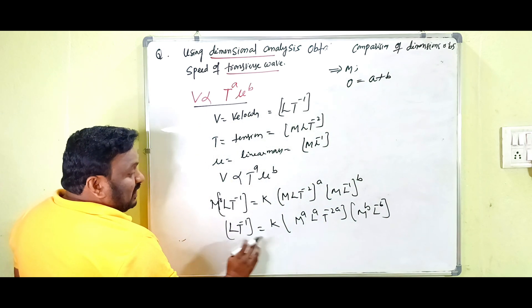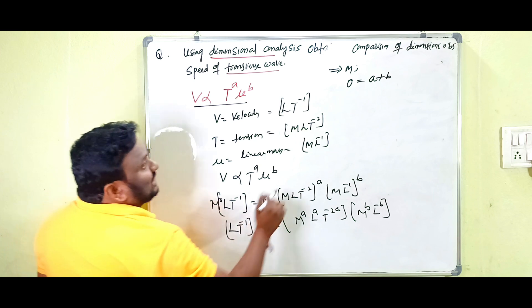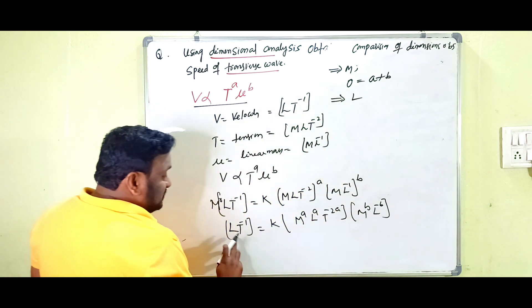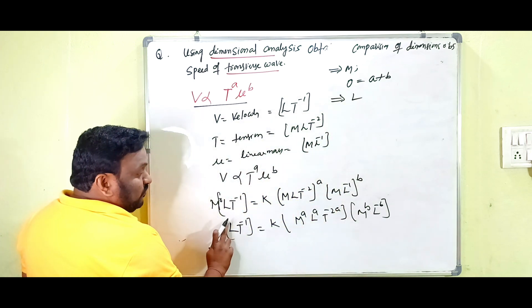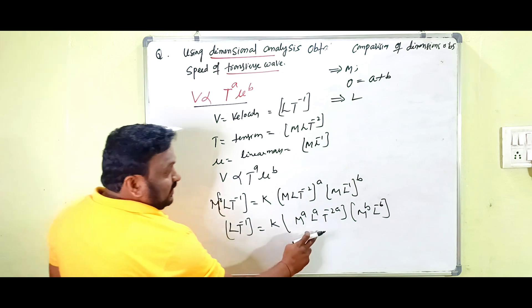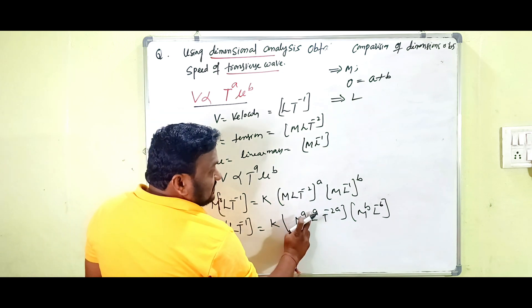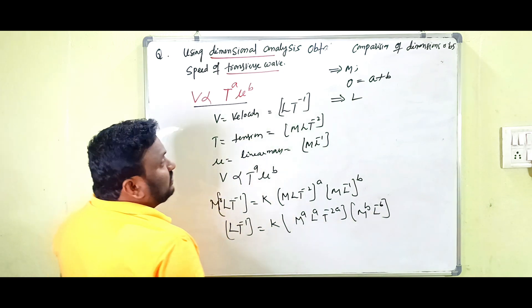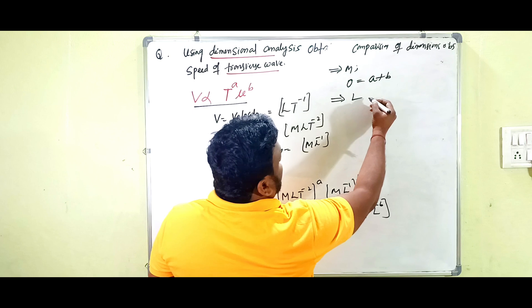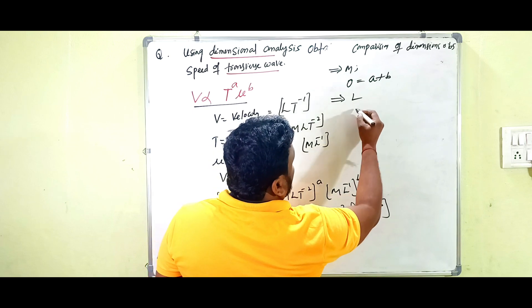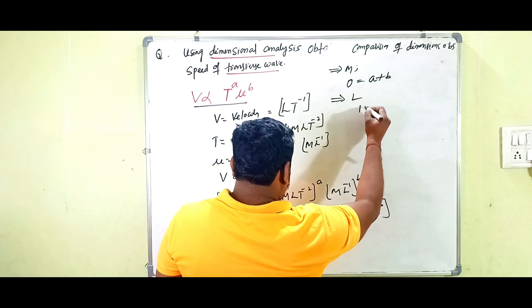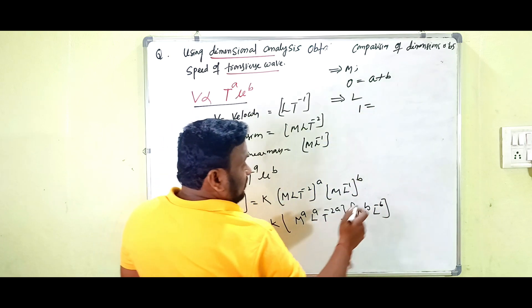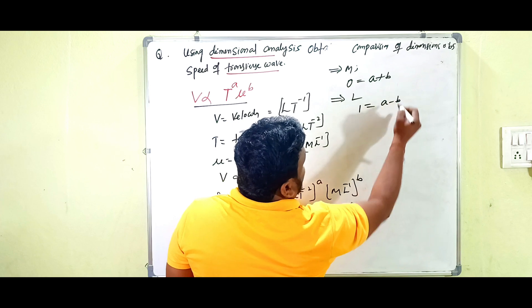Next, comparing dimensions of L on both sides: on the LHS, L has power 1 (L¹), and on the RHS we have L^(a−b). So we get: 1 equals a minus b.